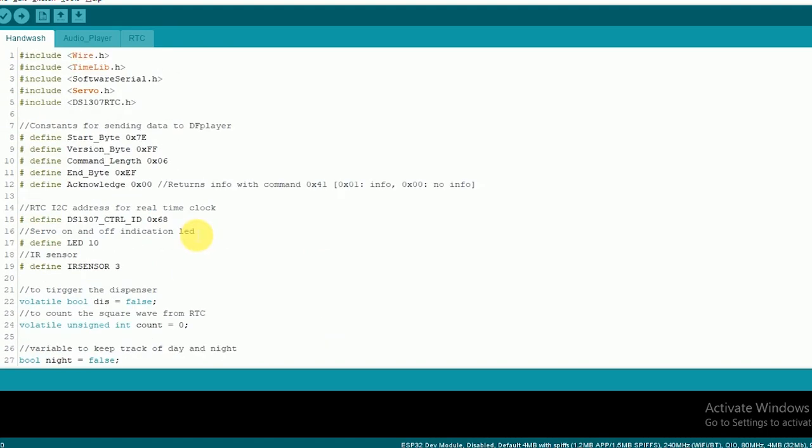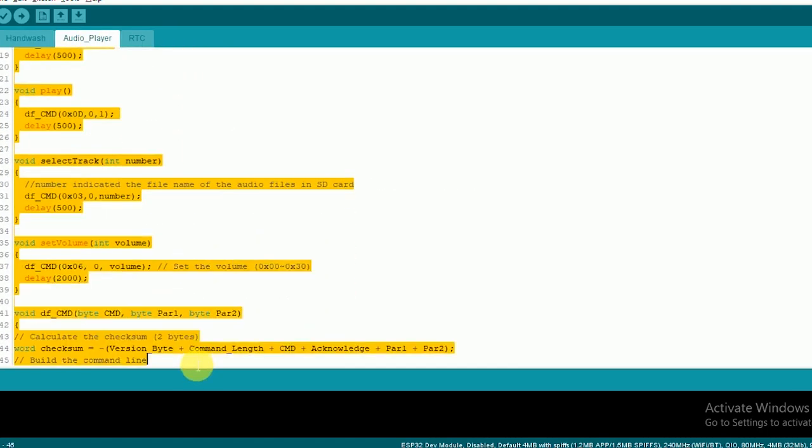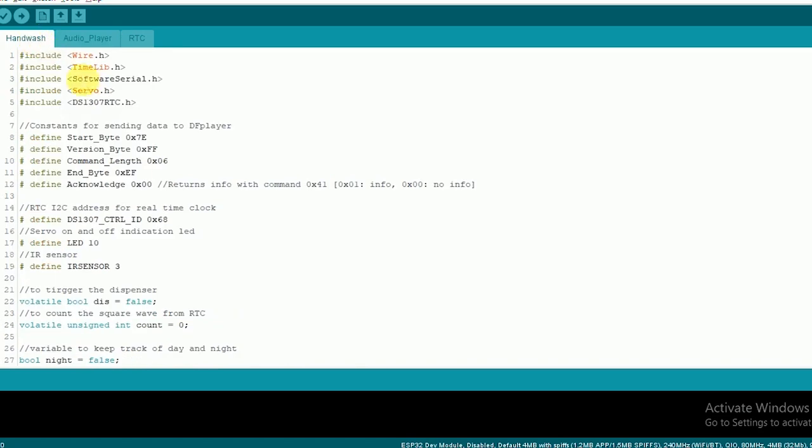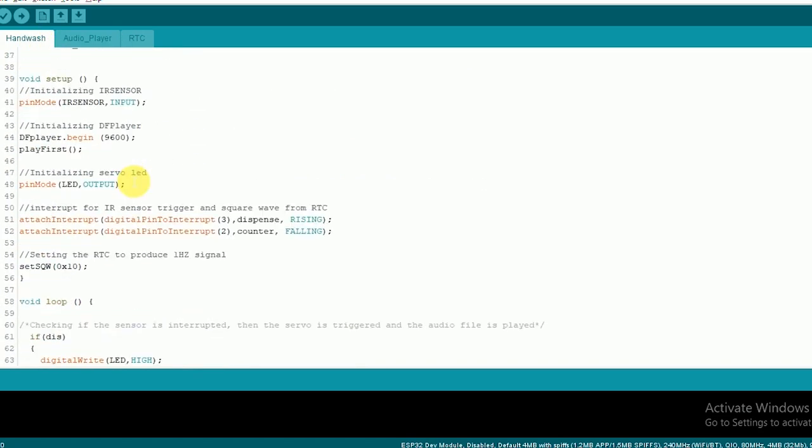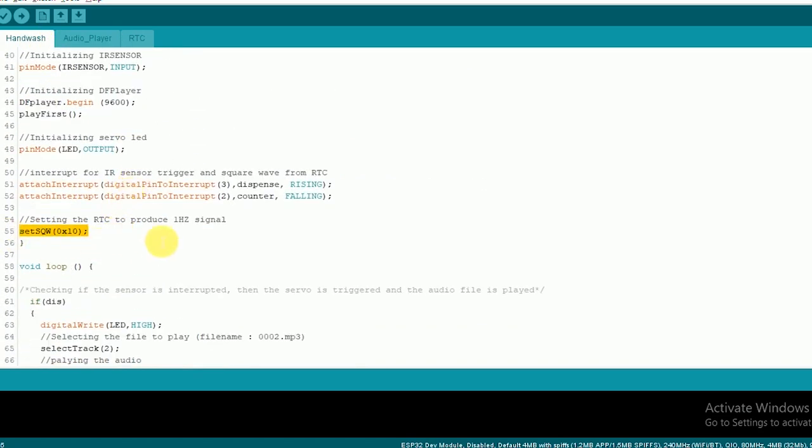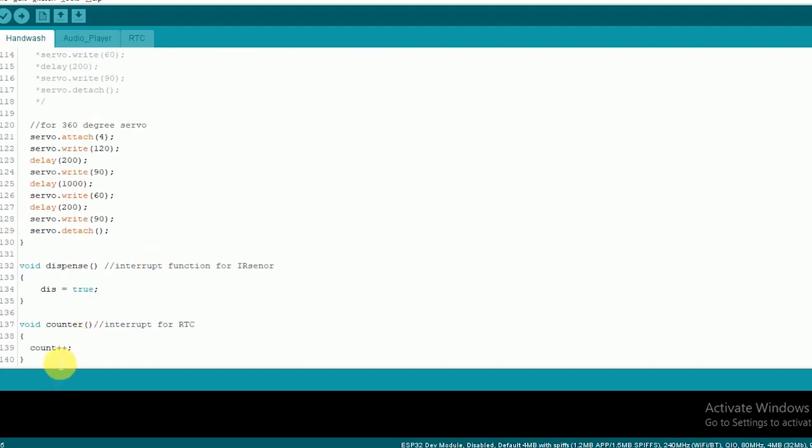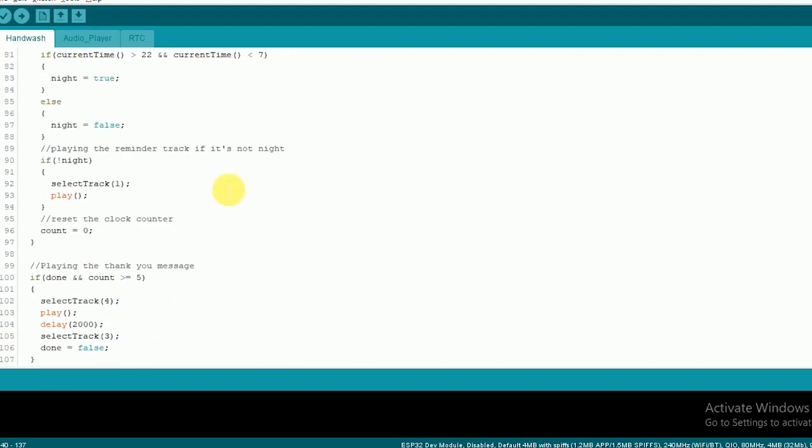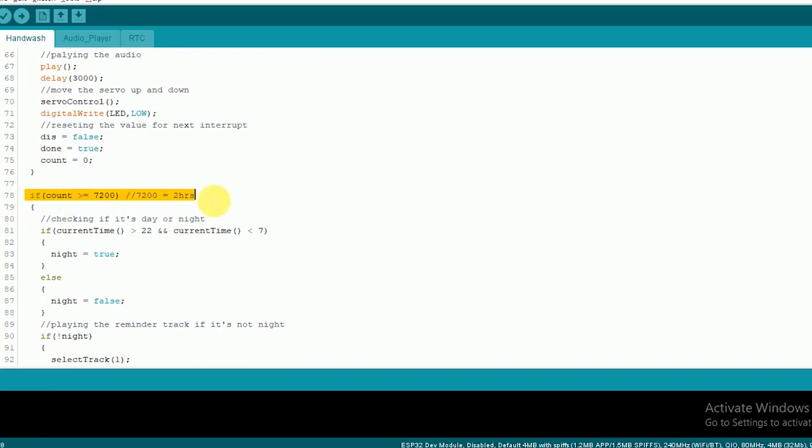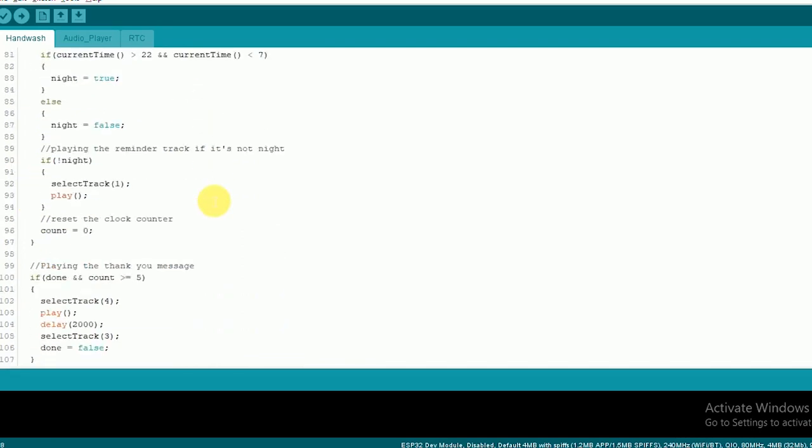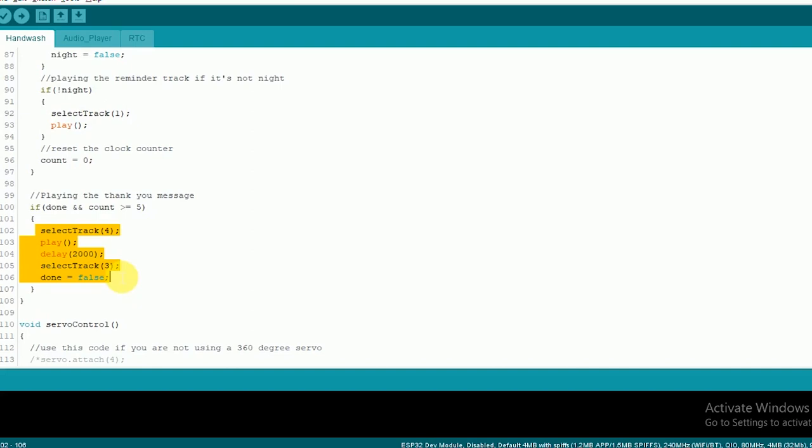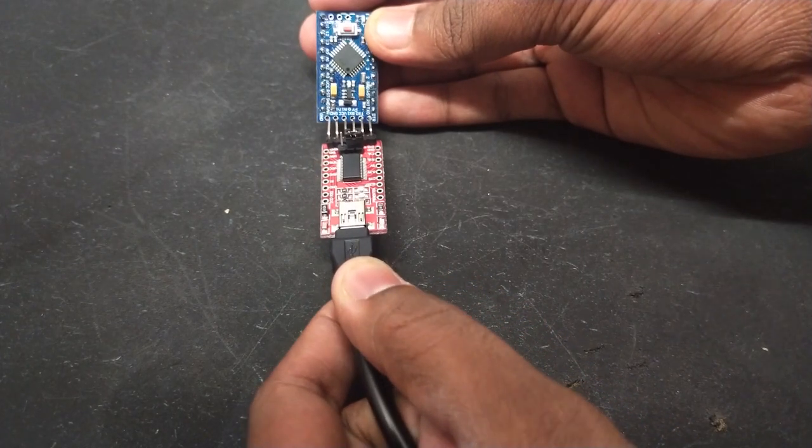For the DF player, we're using the same code from the previous video to pause, play, and select track. Then finally, the RTC square output is set to 1Hz and connected to another interrupt to increment a counter. When this counter reaches the time delay we set, the reminder triggers and notifies the user with a proper audio track. And that's it for the code.